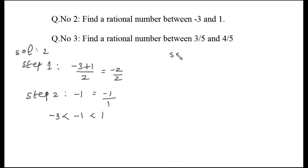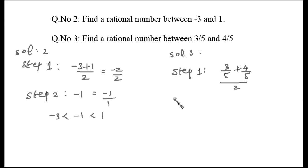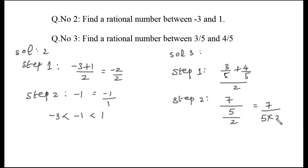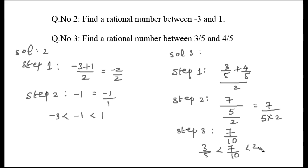Next, find a rational number between 3/5 and 4/5. Following the same steps — finding the average of the two numbers: (3/5 + 4/5) / 2. Since the denominators are the same, add numerators directly: (3 + 4) = 7, giving 7/5 divided by 2, which equals 7/10. Therefore, 3/5 < 7/10 < 4/5.